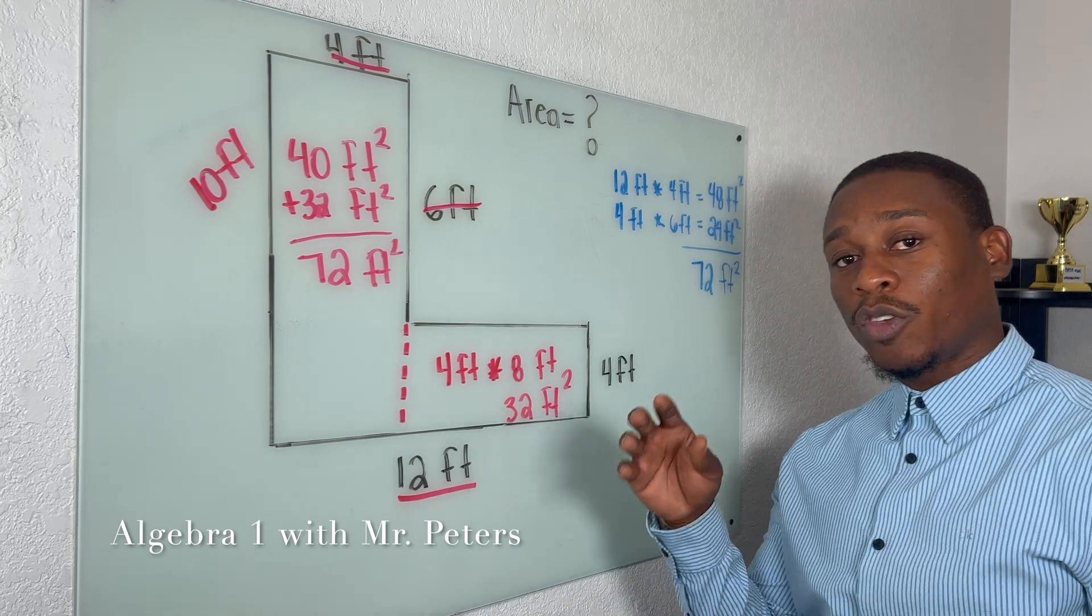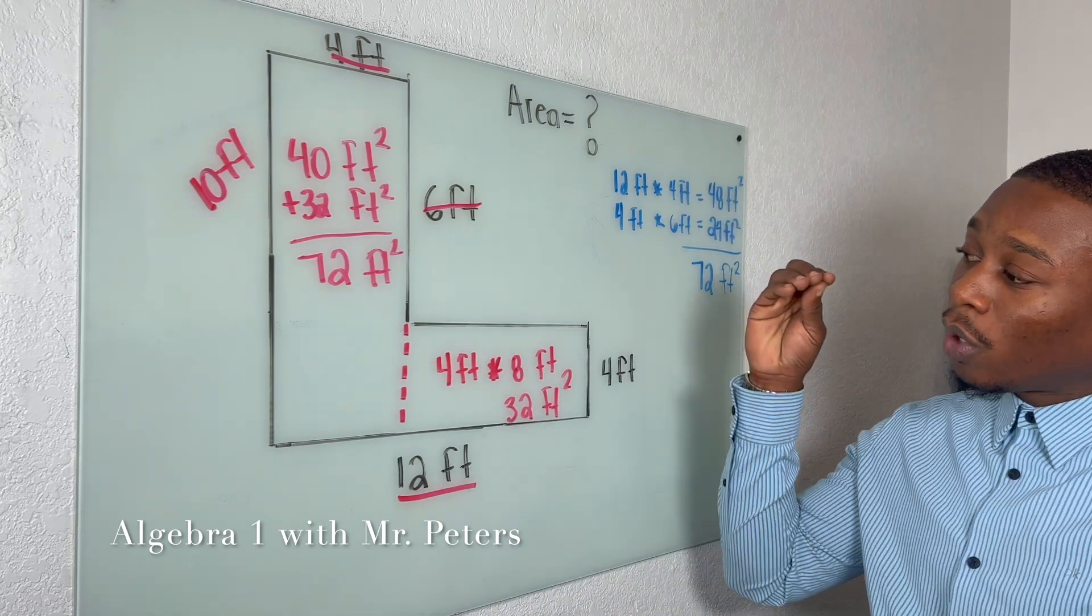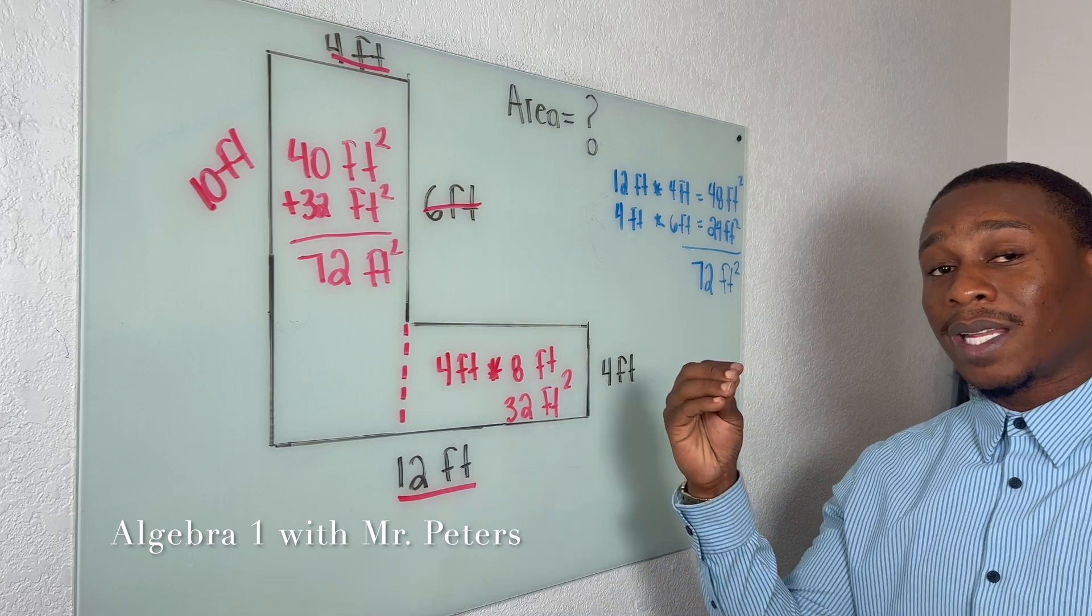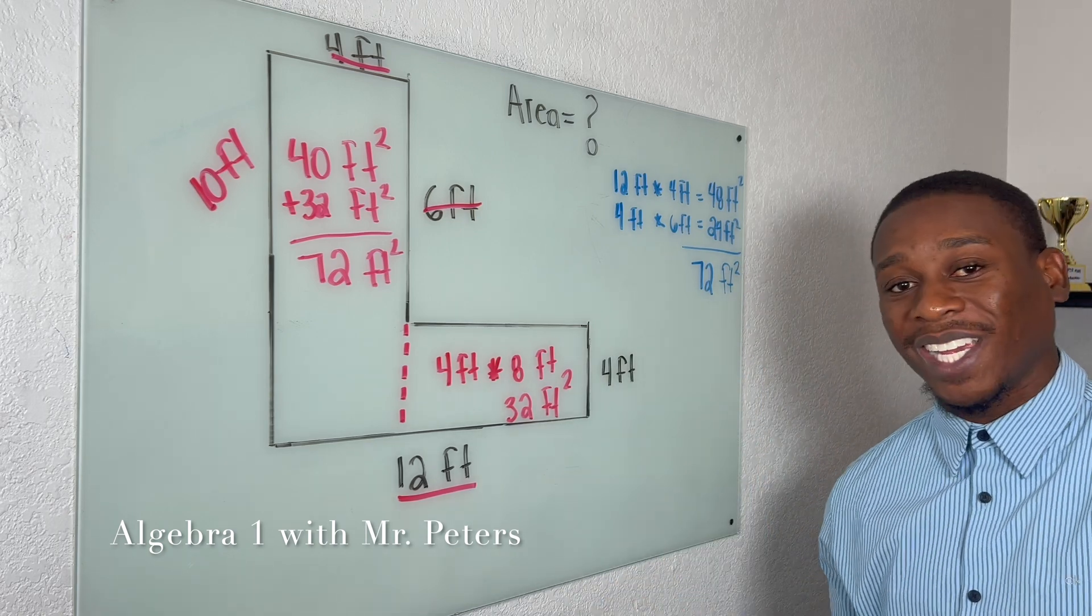So just make sure that if you divide the shapes, that you account for any missing dimensions that we have because it will change.